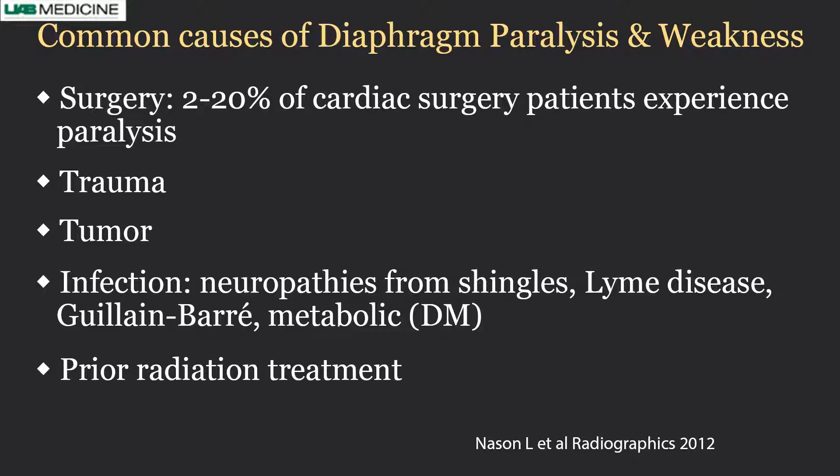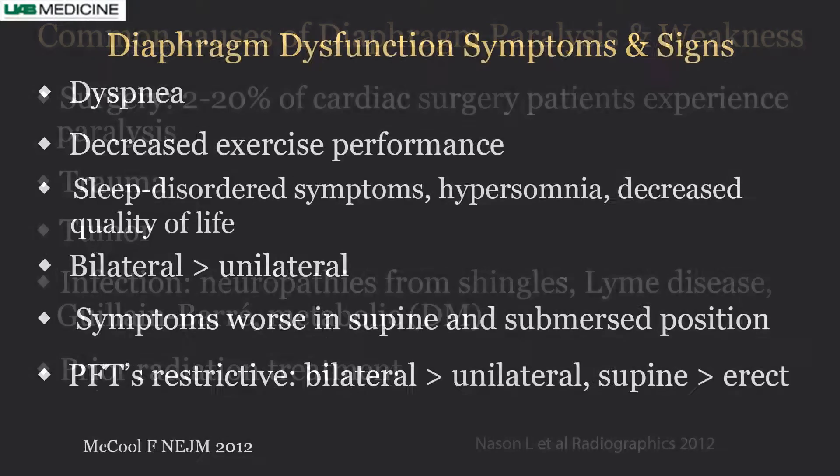If a patient has had prior radiation treatment — for example, for Hodgkin lymphoma or breast cancer involving the upper mediastinum — that can lead to phrenic nerve injury due to radiation fibrosis.